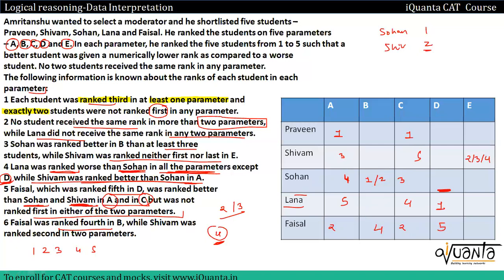Let us now focus on constructing the complete table. We will use the condition that each student was ranked third in at least one parameter to fill in remaining rank-three entries.